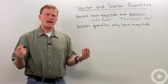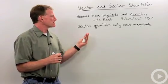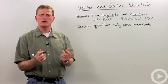So vectors have a magnitude and a direction. Scalar quantities are things that just have a magnitude or an amount.